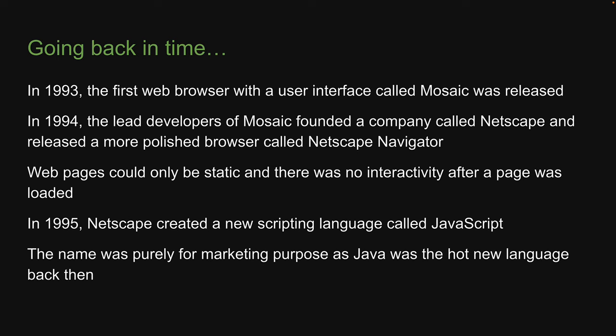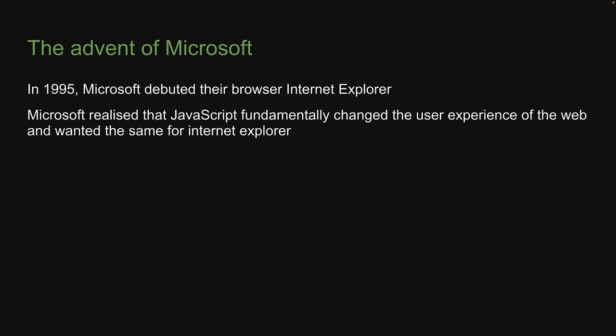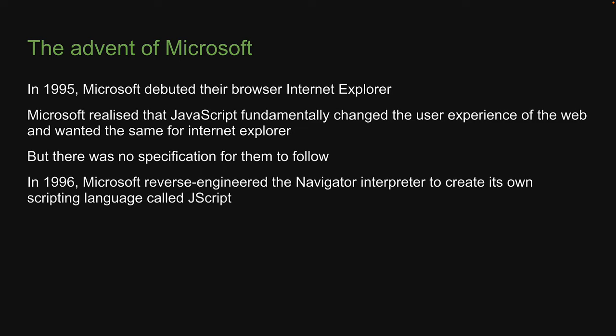The name was purely for marketing purposes, as Java was the hot new language back then. During the same time, in 1995, Microsoft debuted their browser Internet Explorer. This led to a browser war with Netscape. Microsoft soon realized that JavaScript fundamentally changed the user experience of the web and wanted the same for Internet Explorer, but there was no specification for them to follow. In order to match Netscape's JavaScript, in 1996, Microsoft reverse engineered the Navigator interpreter to create its own scripting language called JScript.